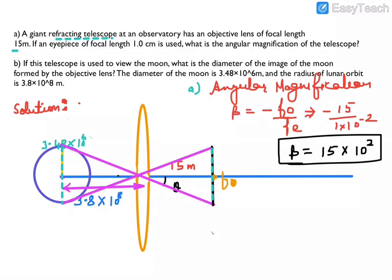Now let's ask the next question: this telescope is used to view the moon. What is the diameter of the image of the moon? The diameter of the moon is 3.48×10⁶ m, and the radius of the lunar orbit — the distance between the moon and the earth — is 3.8×10⁸ m.